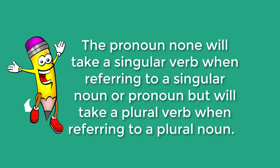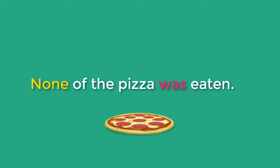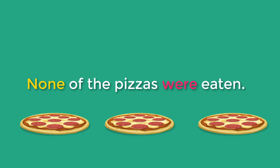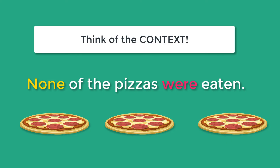Let's go on to the pronoun none. The pronoun none will take a singular verb when referring to a singular noun or pronoun, but will take a plural verb when referring to a plural noun. For example, none of the pizza was eaten. The context tells us that there is only one pizza and no part of it was eaten, so we use the singular verb was. But if there are several pizzas and not any of the pizzas were eaten, none takes the plural verb: none of the pizzas were eaten. Remember that context plays a big part in whether you will use a singular or a plural verb.